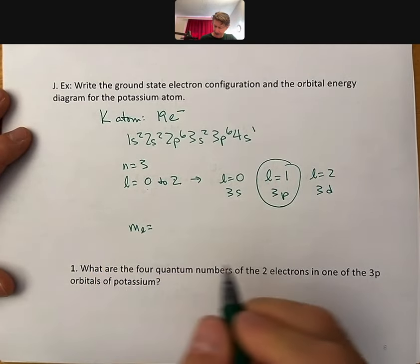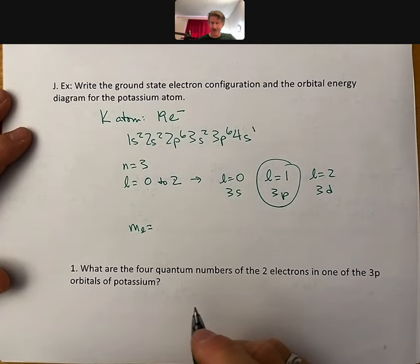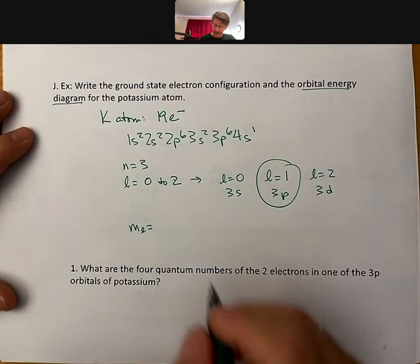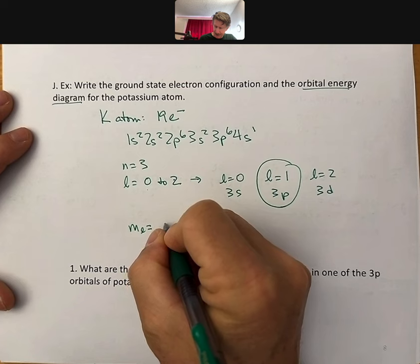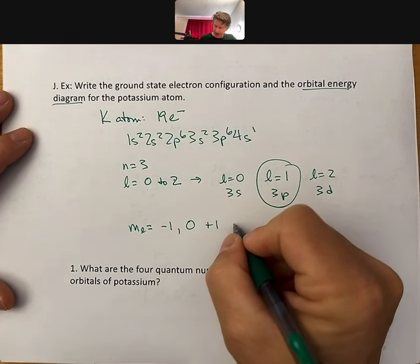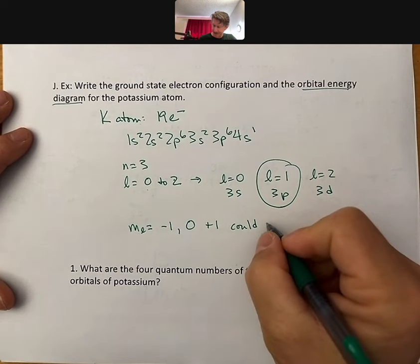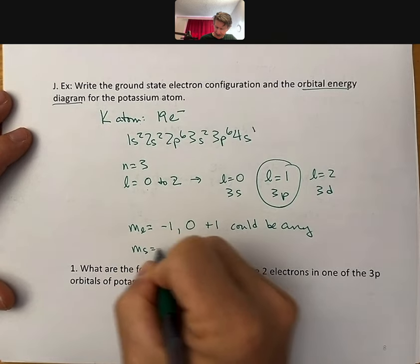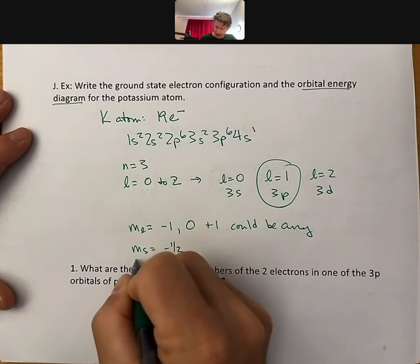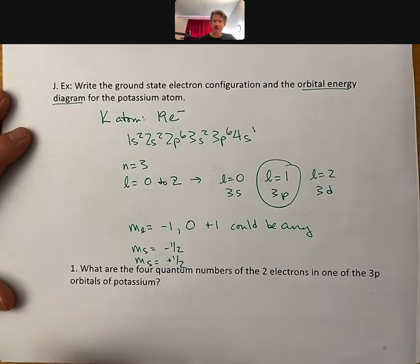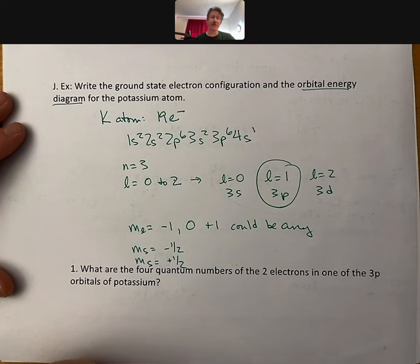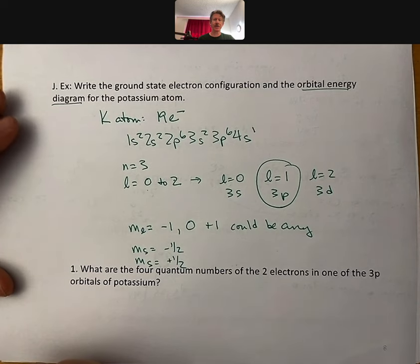M sub L, and I'm sort of doing my work for this one up here now. Lots of space, since I'm not doing the orbital energy diagram right now. M sub L, again, can be minus 1, 0, or plus 1. And I'm just going to write, could be any. And M sub S equals minus half for one of the electrons. M sub S equals plus half for the other electron. And that is how you do some examples of figuring out the quantum numbers for specific electrons in atoms.